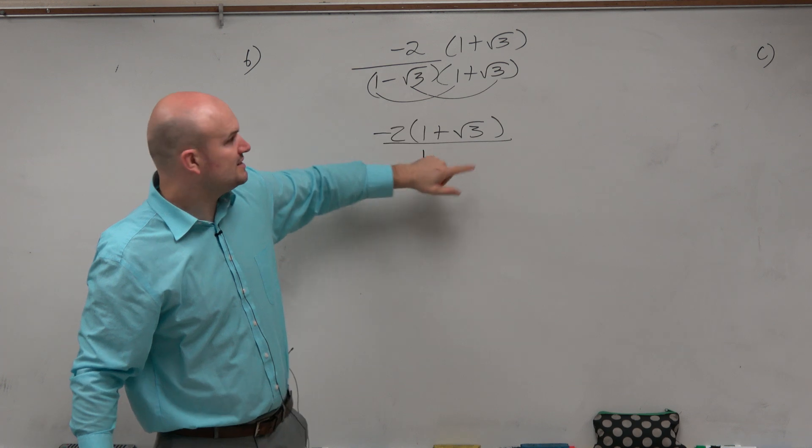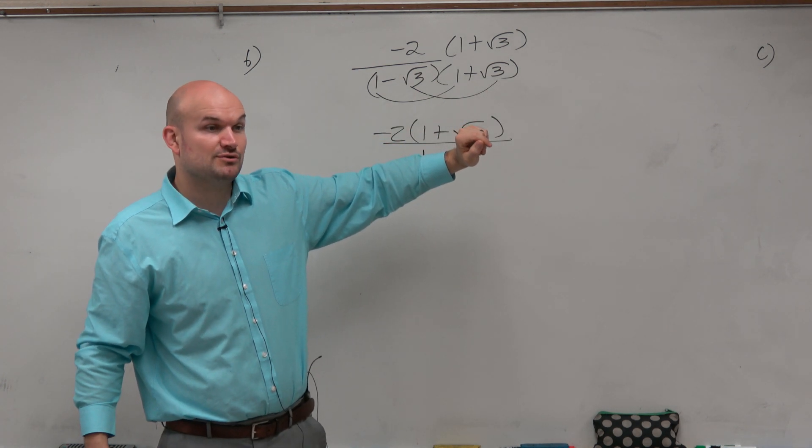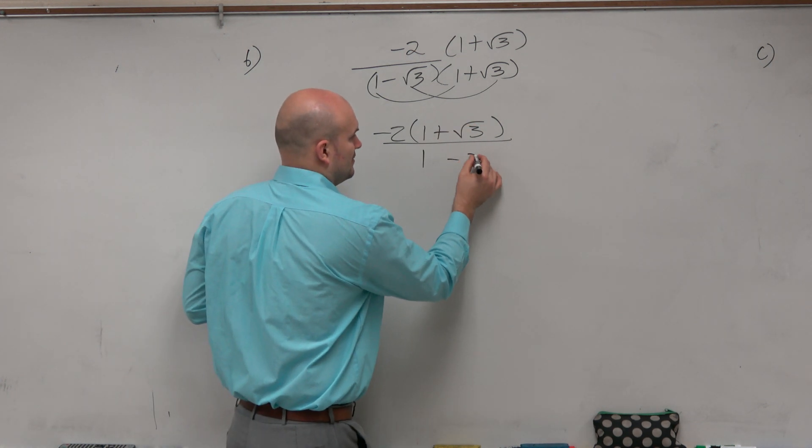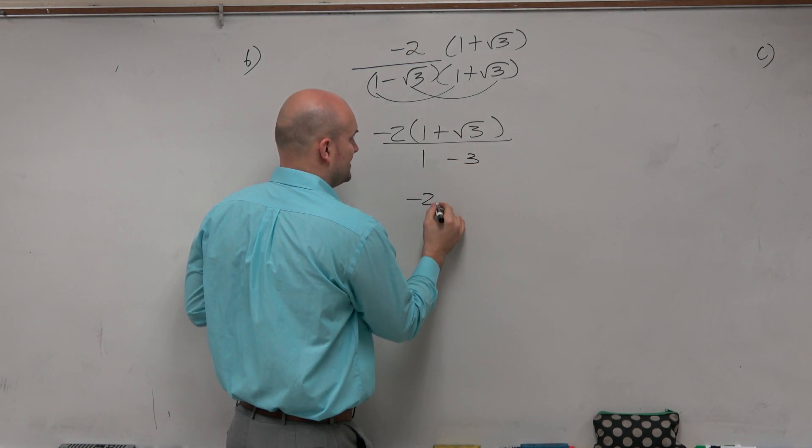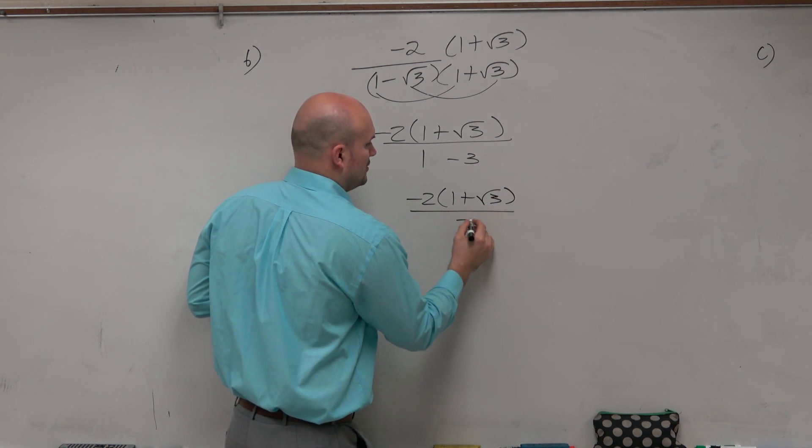Negative square root of 3 times square root of 3 would be negative square root of 3 squared, which should be negative 3. So that gives me negative 2 times 1 plus the square root of 3, all over negative 2.